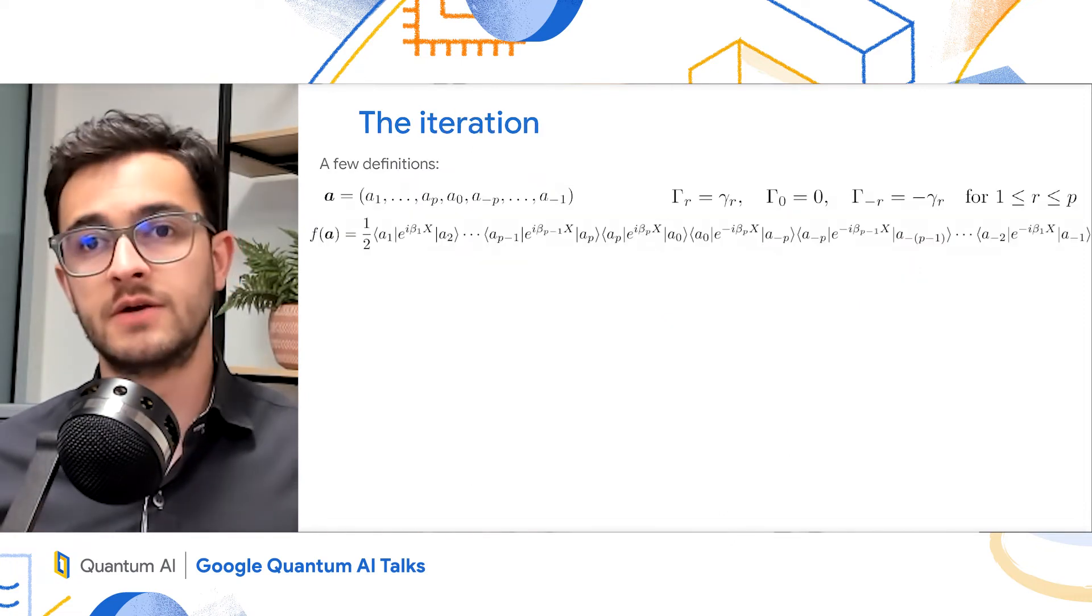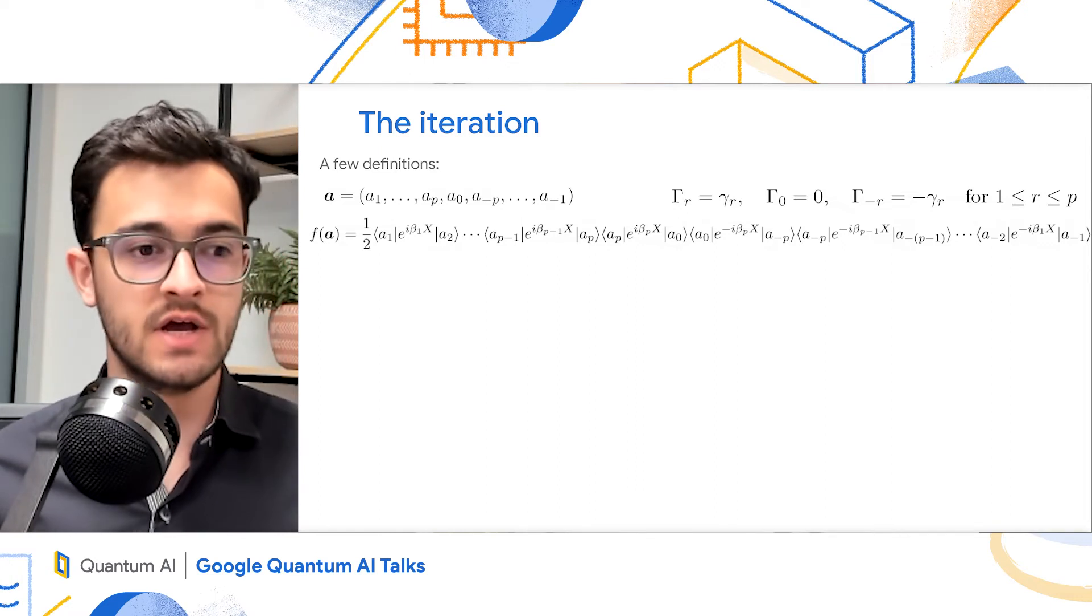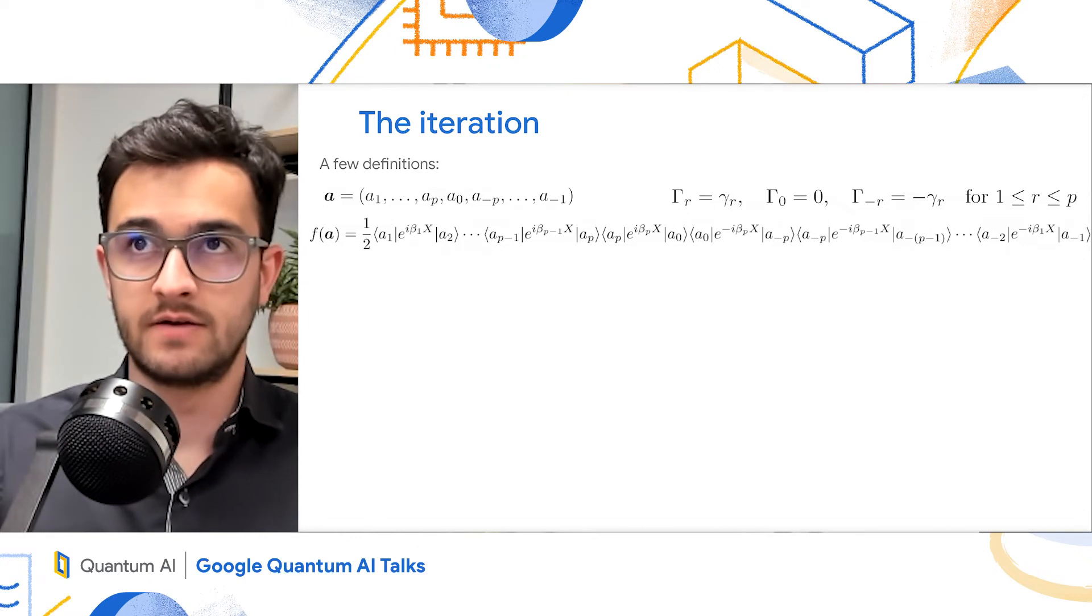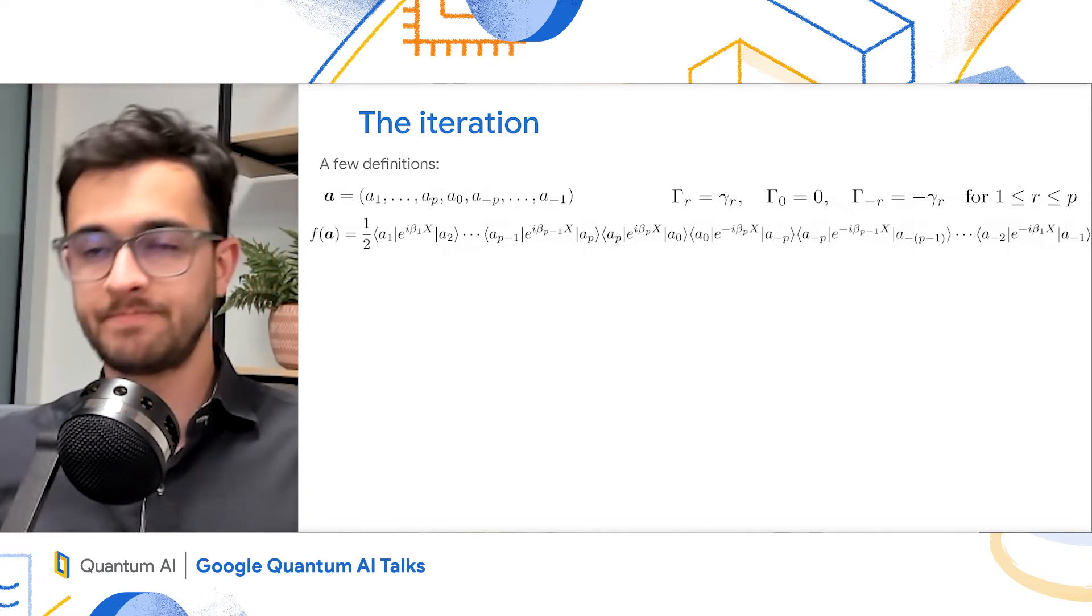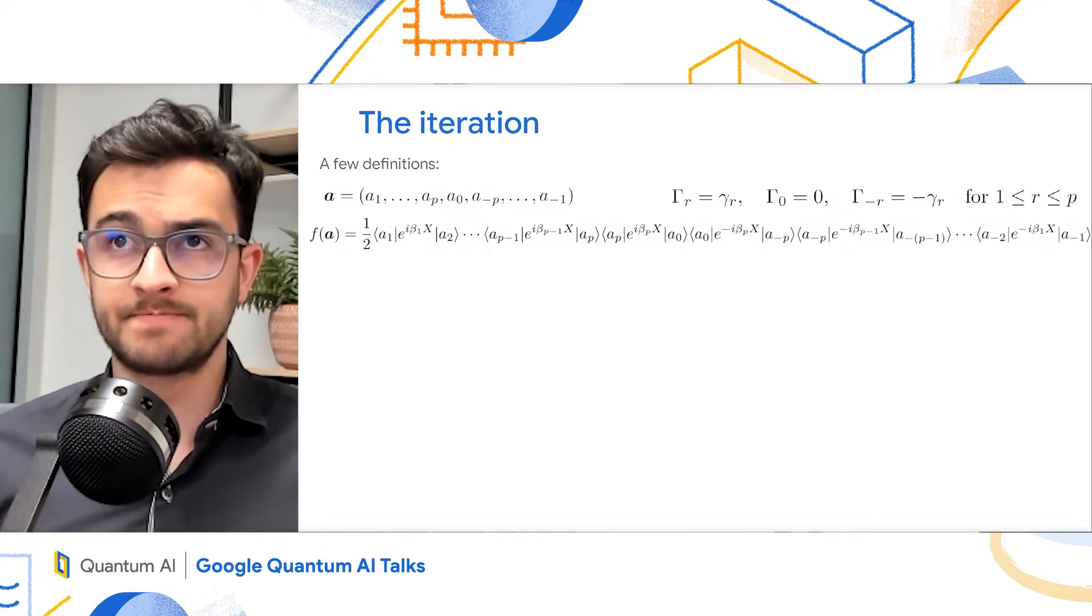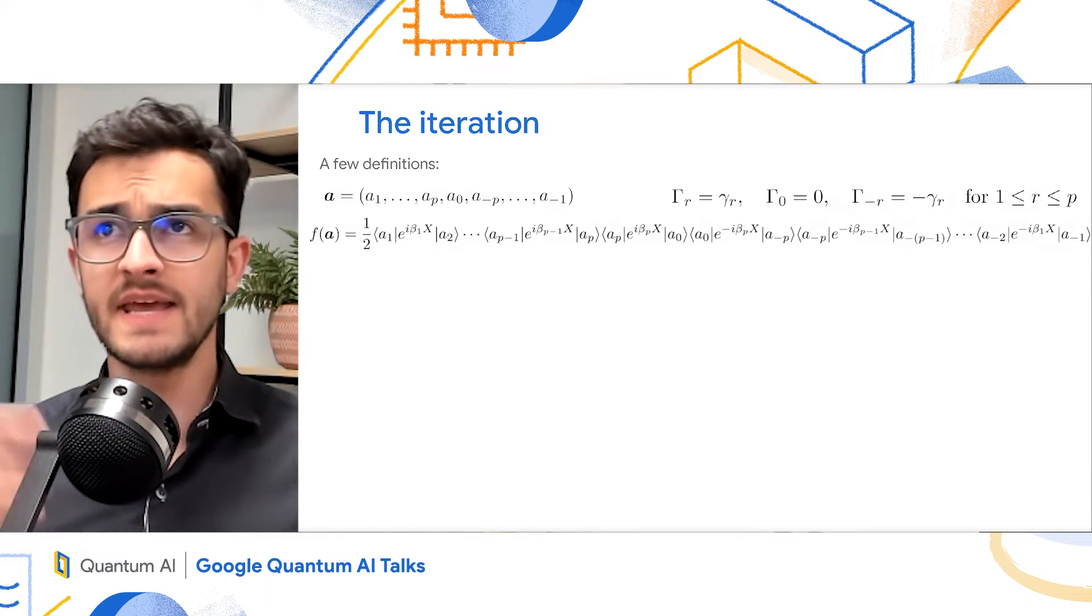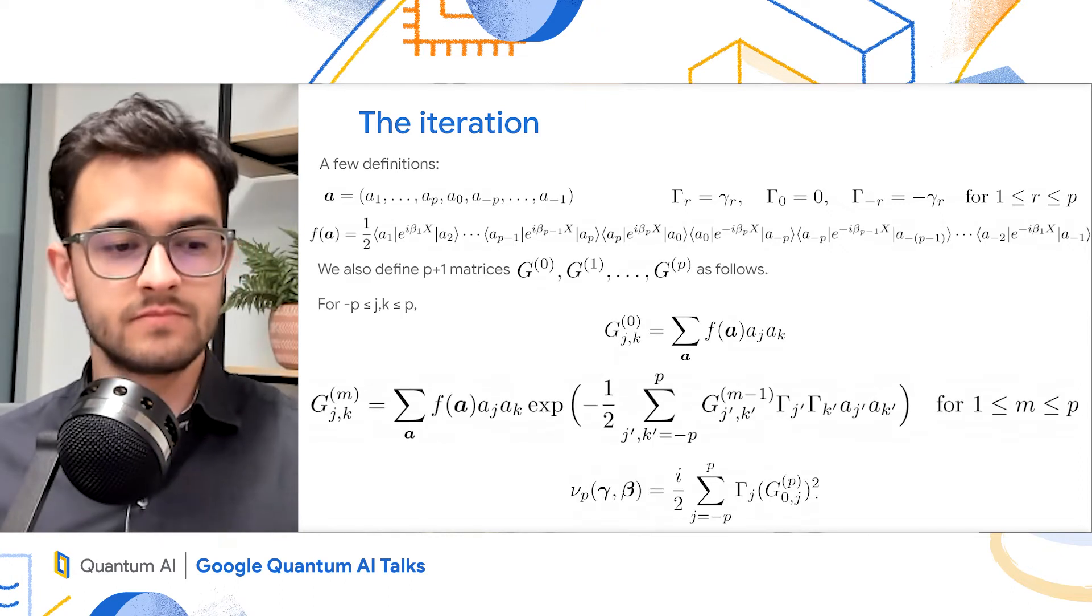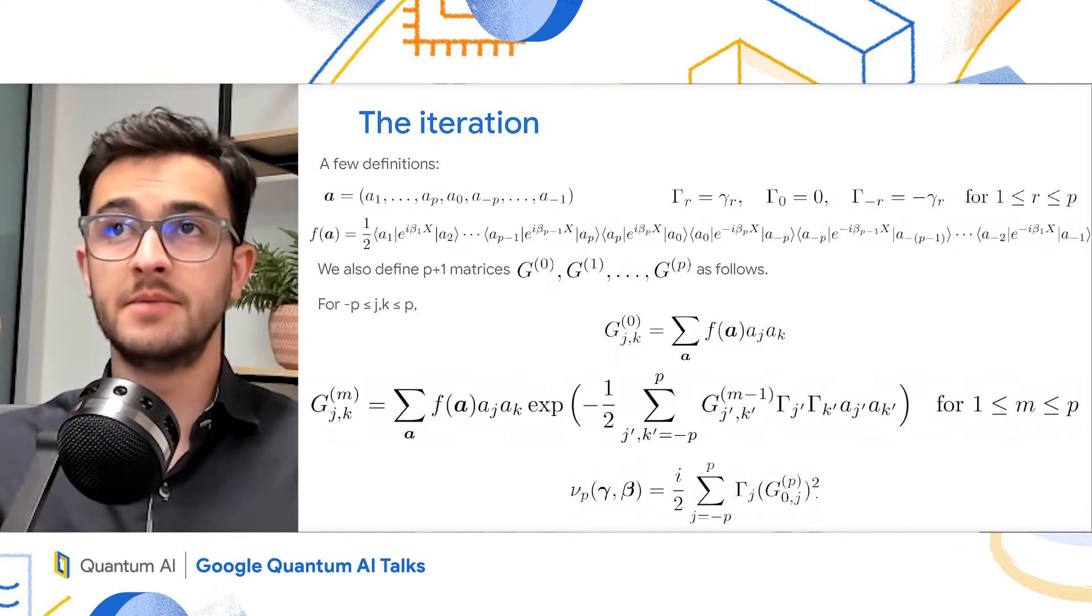So I'll very briefly show the iteration, so you get a sense of what it looks like. So we need a few definitions. We have bit strings of size 2p plus 1. And they will be indexed 1 all the way to p, 0, minus p, all the way to minus 1. There's this vector capital Gamma, which depends on the little gammas. And there's this function f that takes bit strings and outputs some trigonometric function of the betas.